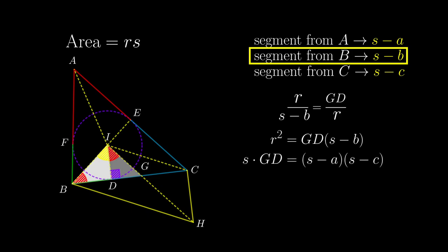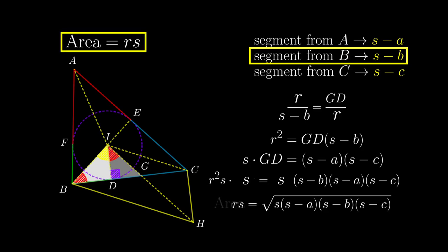Combining with the result derived a minute ago, we first multiply both formulae. Cancel GD on both sides, then multiply both sides by s. Then square root both sides. Since the area is r times s, we finally have the Heron's formula.